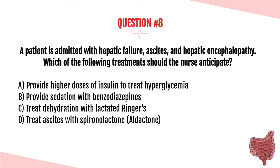Question number eight. A patient is admitted with hepatic failure, ascites, and hepatic encephalopathy. Which of the following treatments should the nurse anticipate? A. Provide higher doses of insulin to treat hyperglycemia. B. Provide sedation with benzodiazepines. C. Treat dehydration with lactated ringers. Or D. Treat ascites with spironolactone (Aldactone).